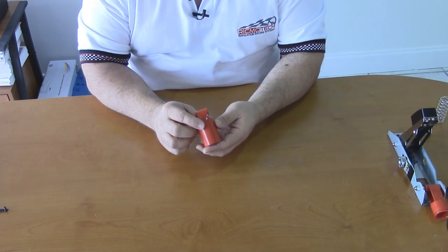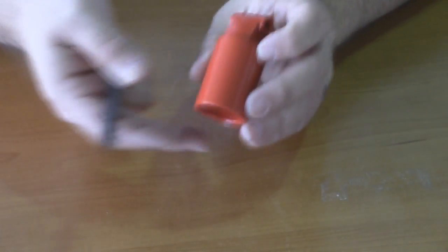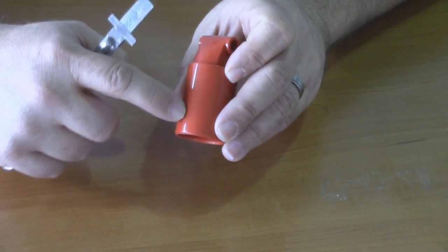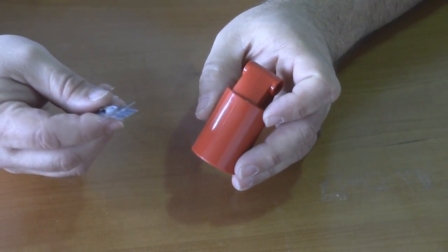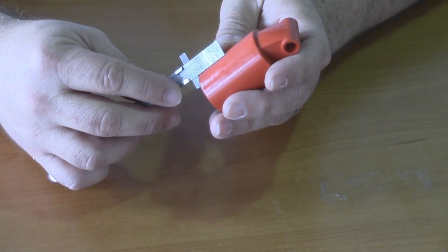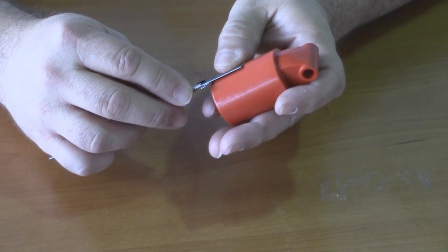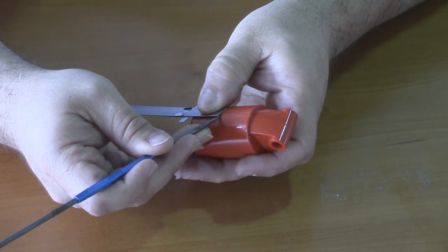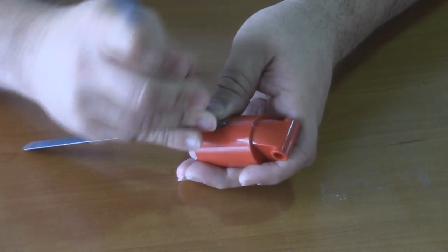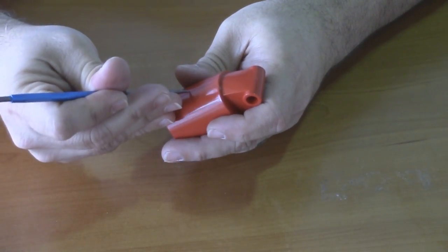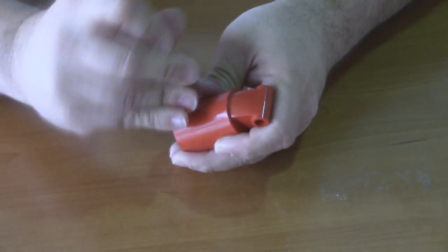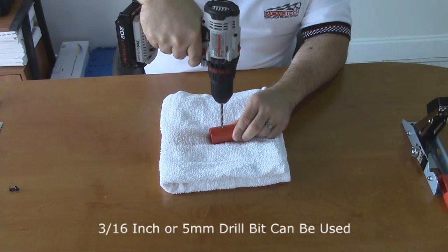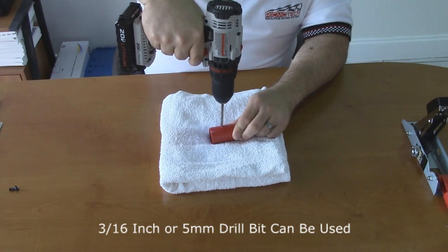Now we need to drill a hole in the top housing. You'll notice that there's a seam in the molding that runs along the side of the red housing. We're going to mark up from the bottom one inch or 25 millimeters and we're going to make a mark with a pointed tool. Using a 3/16 drill bit, drill a hole on the mark you just made.